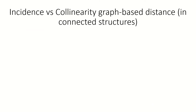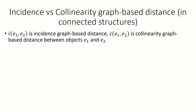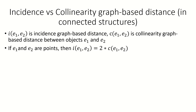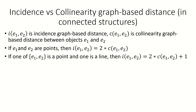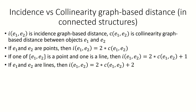To finish the video, let's look at a connection between collinearity graph-based distance and incidence graph-based distance. Let I(E1, E2) denote the incidence graph distance between a pair of elements E1 and E2, and let C(E1, E2) denote the collinearity graph distance. Then: if E1 and E2 are a pair of points, their incidence graph distance is twice their collinearity graph distance; if they are a point and a line, their incidence graph distance is one more than twice their collinearity graph distance; and if both are lines, their incidence graph distance is two more than twice their collinearity graph distance.